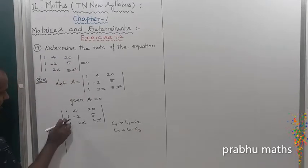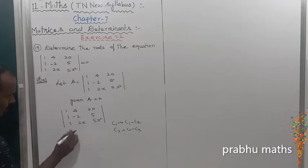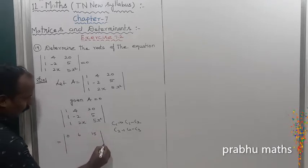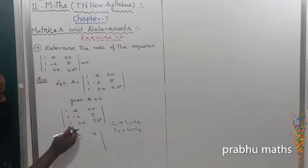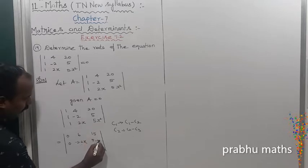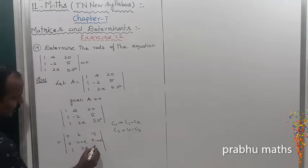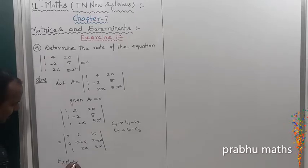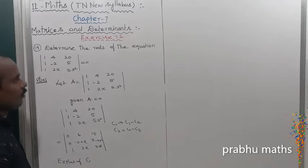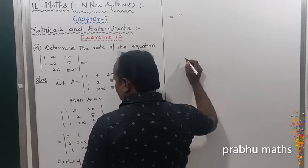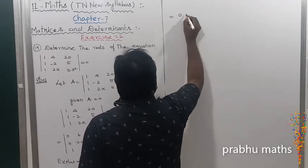After applying the column operations, the result is: first column entries become 1 minus 1 going to 0, and 1 minus 5 going to minus 4 — wait, 6; and 1 minus 1 going to 0, minus 2, minus 2, x; then 5 minus 5 gives 0, x square, 1, 2, x, 5, x square. Now expand along C1. The first entry is 0, entire row closed, this is fully 0.